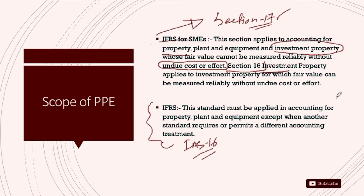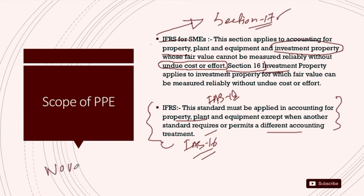Under full IFRS, the same applies. PP&E is accounted for under IAS 16 and any other standard that permits it. So basically there is no major difference here.